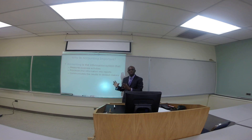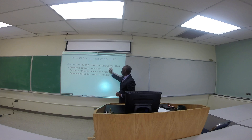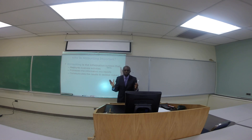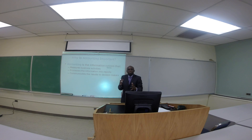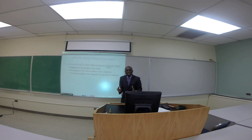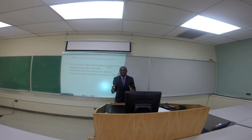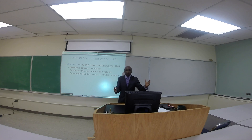Let us zero in on some of the key words in understanding this definition. The first word I want to zero in on is the word 'system.' What is a system? Forget about accounting — just pure English. A system is a set of related parts or pieces put together that make it work. My favorite example is an automobile. You have a car that consists of different pieces, different parts. When you put all those parts together, they make it work, and the purpose of that automobile is to take you from point A to point B.